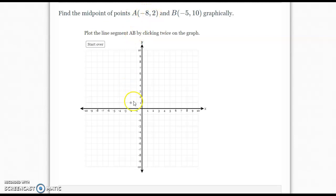A is (-8, 2), so I'm going to go over here. Negative 8 is my x-axis, and positive 2 is my y-axis. So there's my first point. The next point is (-5, 10). So now I'm going to go to negative 5 on the x-axis right here, and my y is 10, so I'm going to go all the way up to 10. So I have plotted AB.